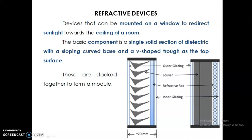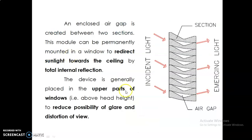Next is the refractive device. This is a single solid section of dielectric material with a curved base and a V-shaped draft. It will reflect the light and illuminate the interior space, while also reducing the amount of glare entering the system. These can also be installed in windows.